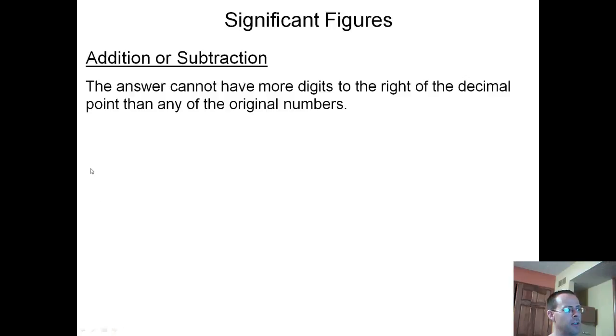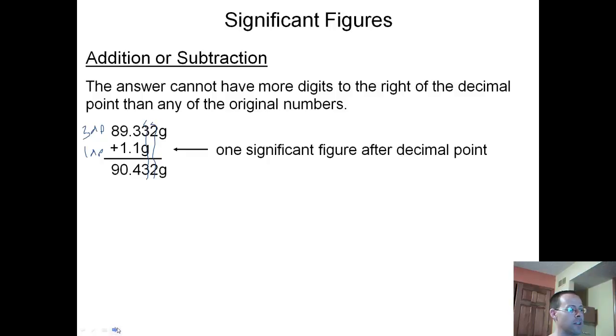Addition and subtraction: the answer that we get when we add or subtract cannot have more digits to the right of the decimal than any of the original numbers. Here is our example. We have 89.332 grams and 1.1 gram. This first number, how many decimal places do we go to? Three decimal places. This number, we have one decimal place. So our second number only has one, so our answer must only go to one. This column is not significant, that column is not significant. So 90.4 grams is our answer.